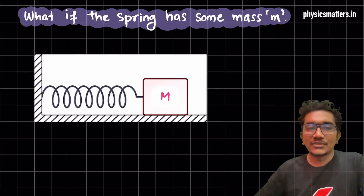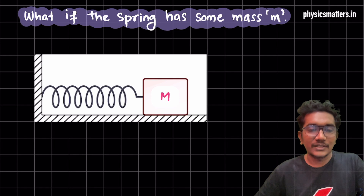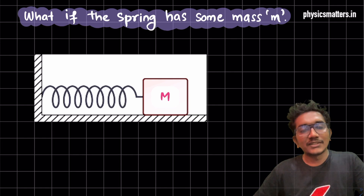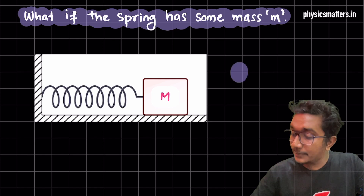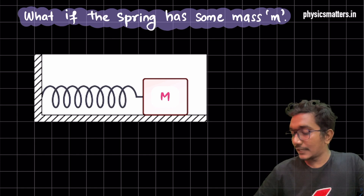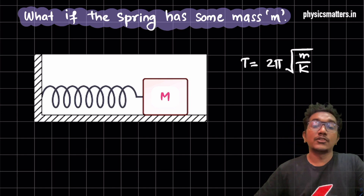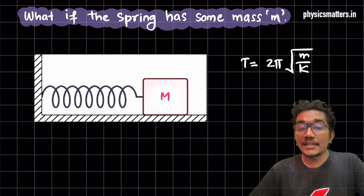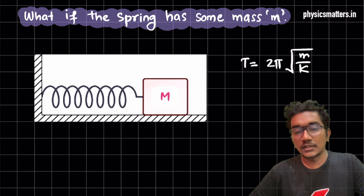Hello everyone. So this is an interesting question — one of my favorite questions. The question is: what if the spring has some mass m, then what is the time period? We know that the time period of a spring mass oscillation is 2π√(m/k). But here, m was actually the mass of the object — the mass of the block.